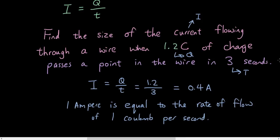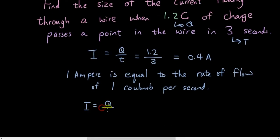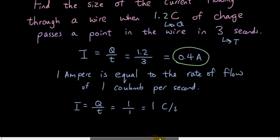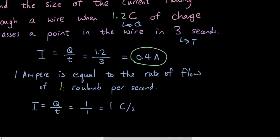Because if you guys imagine, if I is equal to Q over t, and Q is equal to 1, and t is equal to 1, then I would be equal to 1, 1 coulomb per second. So what does the 0.4 in this case mean is that we can basically replace the number 1 with 0.4. So this means 0.4 coulombs passes through a point per second.